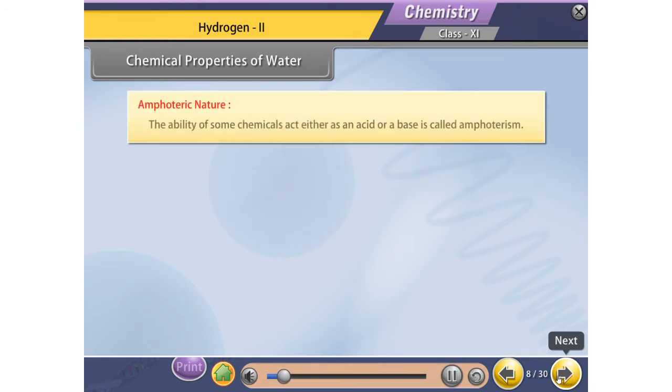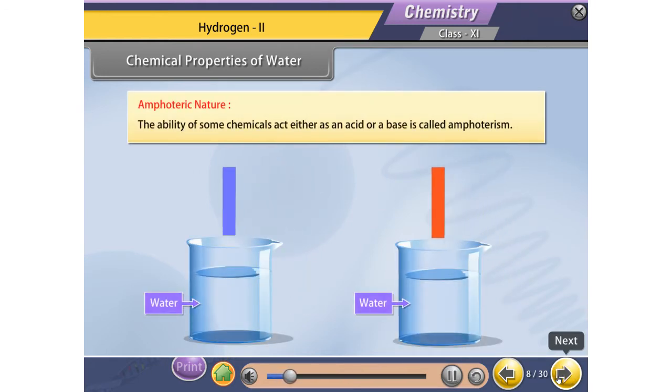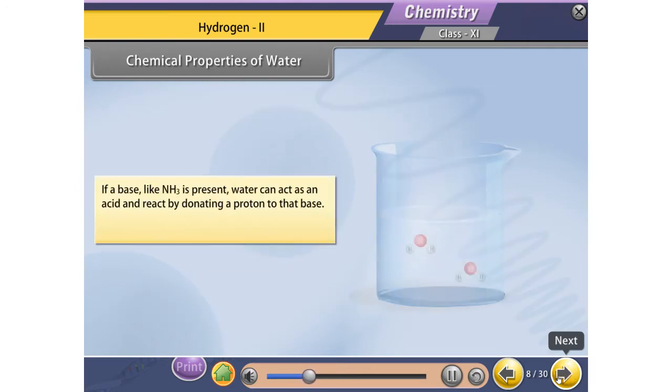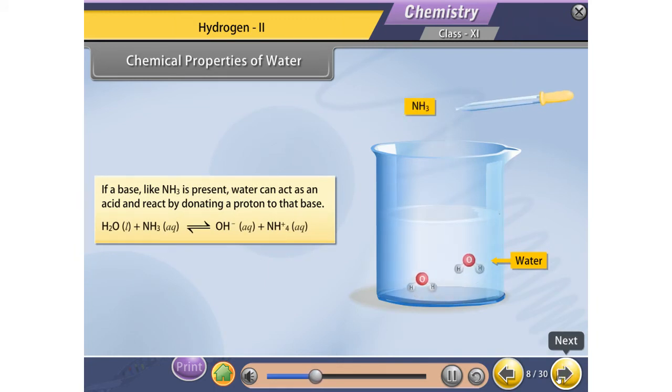Amphoteric nature: The ability of some chemicals to act either as an acid or a base is called amphotericism. If a base like NH3 is present, water can act as an acid and react by donating a proton to that base.